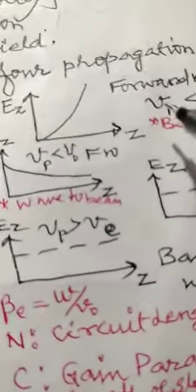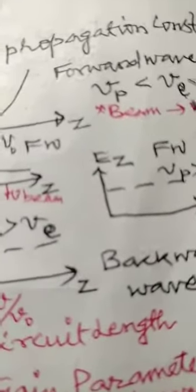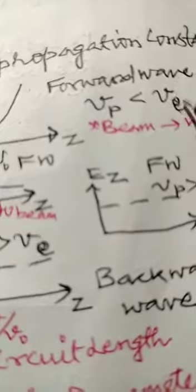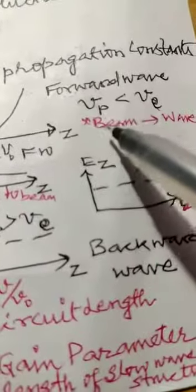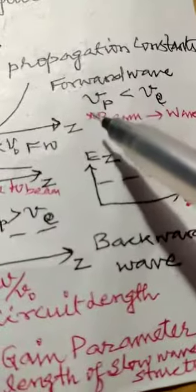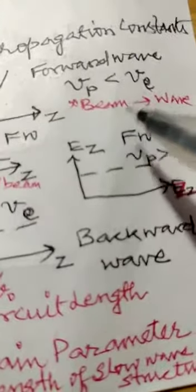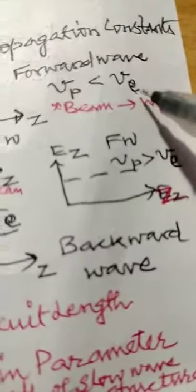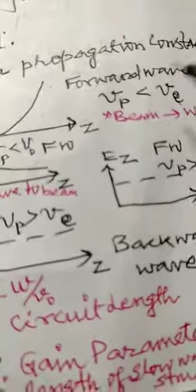Corresponding to gamma 1, we have an exponentially growing field, termed as forward wave A. In this condition, the phase velocity of the electric field is less than the phase velocity of the electron beam. In this mode, the electrons transfer energy to the axial field and amplification takes place.